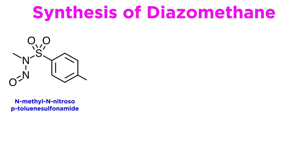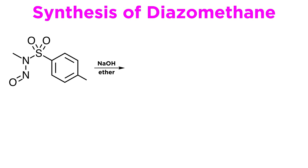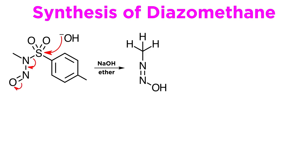Diazomethane can be synthesized from N-methyl-N-nitrosotoluene sulfonamide. Treatment of this compound with sodium hydroxide in ether allows for the following mechanism. The hydroxide ion attacks the sulfur atom and kicks off this whole group, which will be the more important fragment.